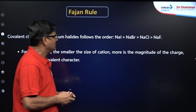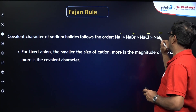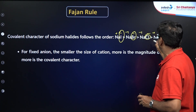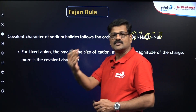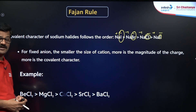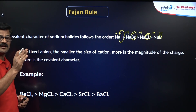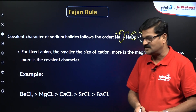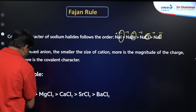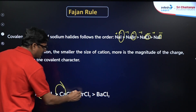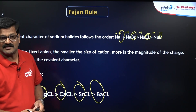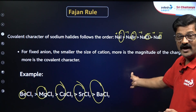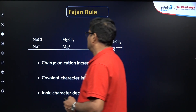For example, comparing covalent character: I⁻, Br⁻, Cl⁻, F⁻ with sodium. As the size of the anion increases, covalent nature increases. For a fixed anion — consider beryllium chloride, magnesium chloride, calcium chloride, and barium chloride. Chlorine is the fixed anion. Beryllium is small, magnesium is bigger, calcium is larger, then strontium and barium. As the size of the cation increases, covalent character decreases. So beryllium chloride is more covalent and barium chloride is less covalent.